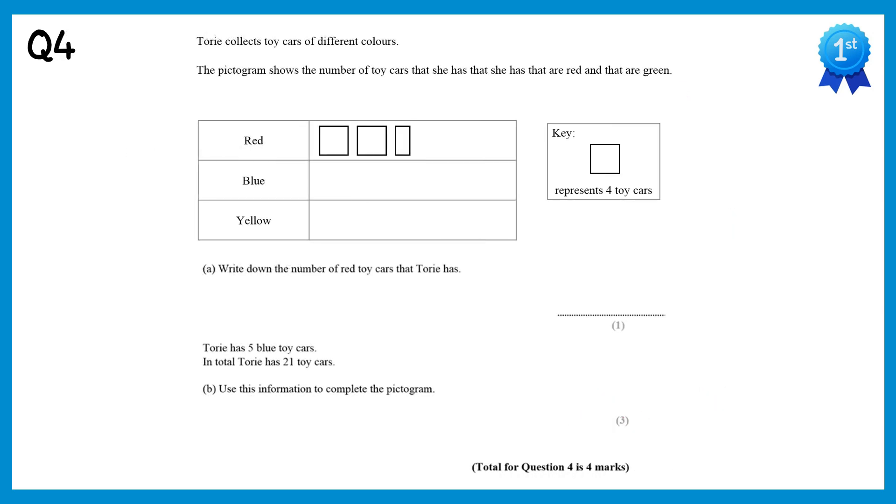In the question the key tells us that one of these squares represents 4 toy cars. So if we look at the red cars, this first square represents 4, the next square is also 4, and after this we have half a square so that must represent 2. If you add up 4, 4 and 2, you get 10, so Tory has 10 red cars.